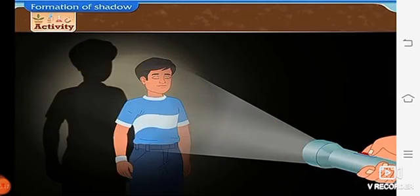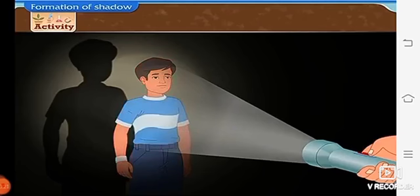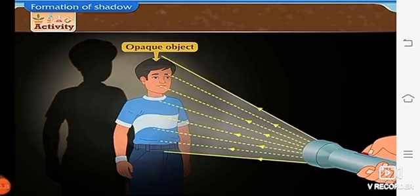What happens? What do you see on the wall? When your friend comes in front of the torch light, a dark patch is formed on the wall. This is because if an opaque object comes in the way of a light source, light does not pass through it.